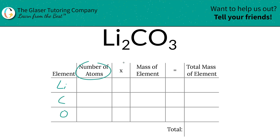Next is to identify the number of atoms — that's where the subscripts come into play. Now, if you don't see a subscript at the bottom of the element, just put in a 1, because that's what it is assumed to be. So 2, 1, and 3.